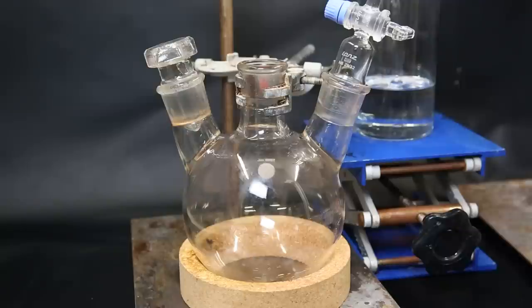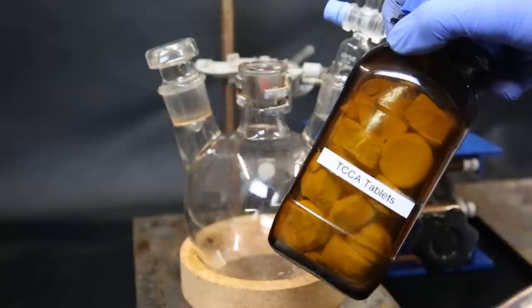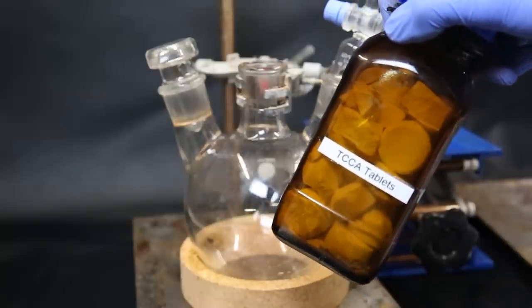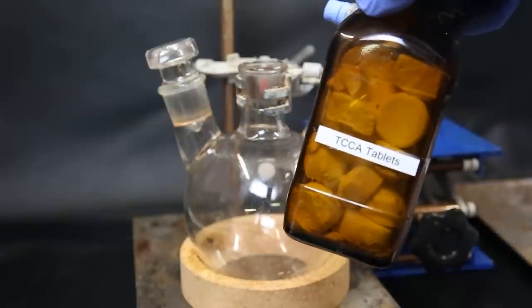Now I set up the chlorine production part of the setup. So I have set up a flask with a stopper and a gas adapter. To produce the chlorine, I will use TCCA and hydrochloric acid. The cheapest source of TCCA is pool chlorine tablets, which are pretty much pure TCCA.